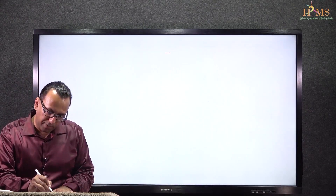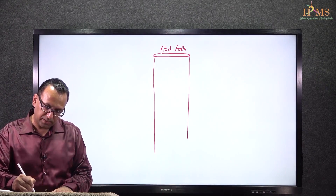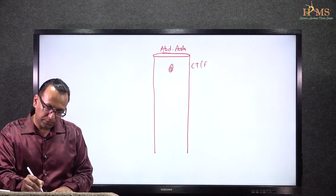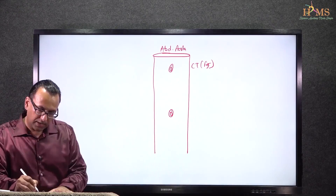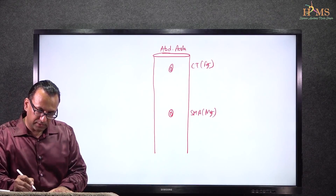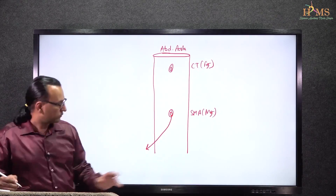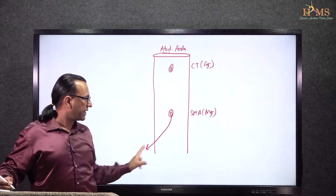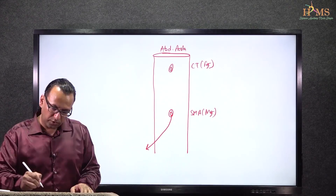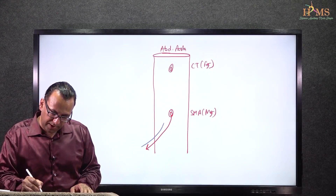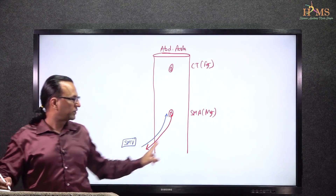Drawing the abdominal aorta, it gives us the celiac trunk for the foregut and then the superior mesenteric artery for the midgut. The superior mesenteric artery runs to supply the midgut derivatives, and it is followed by the superior mesenteric vein coming from the midgut and running alongside the superior mesenteric artery.